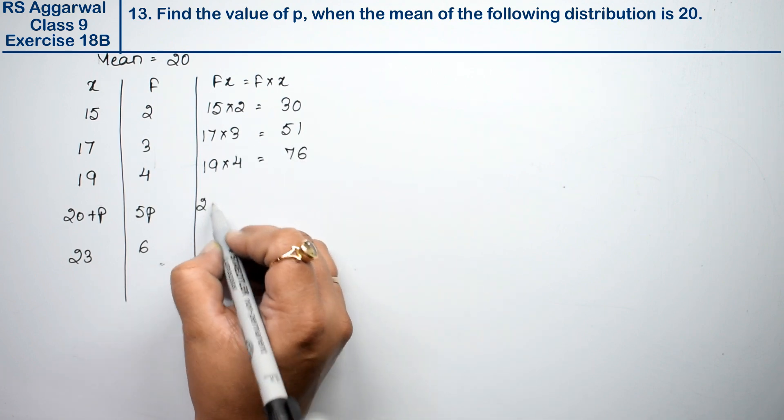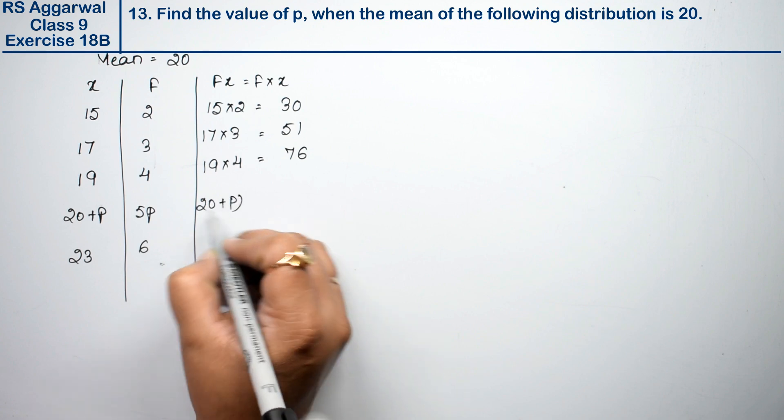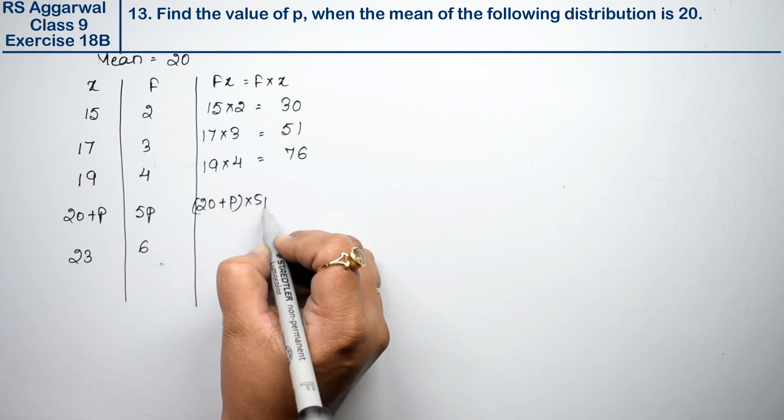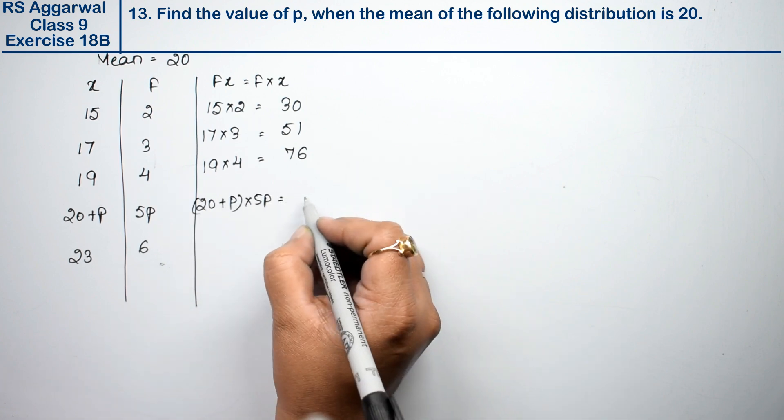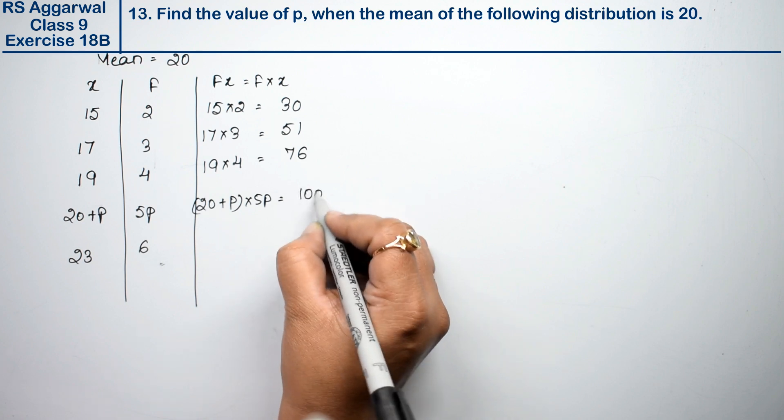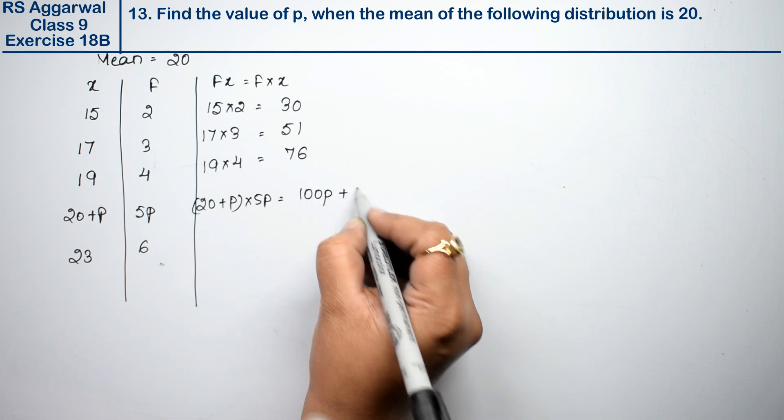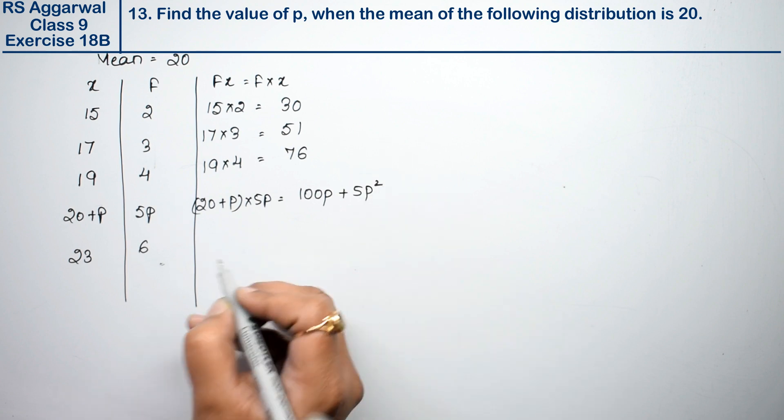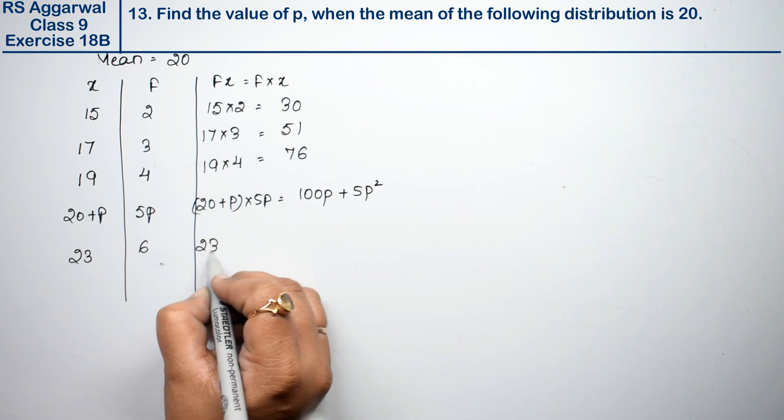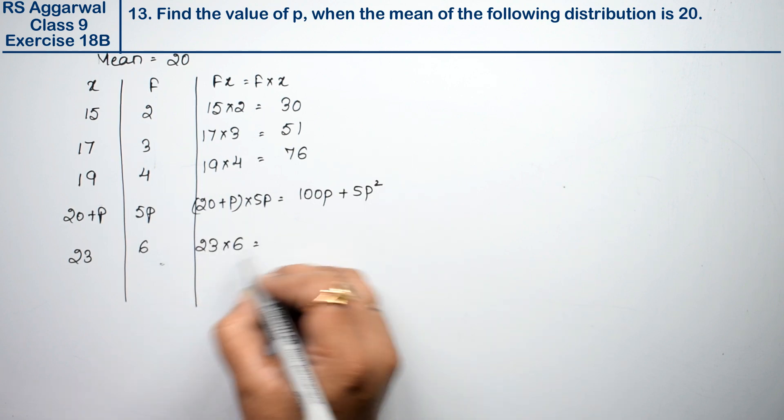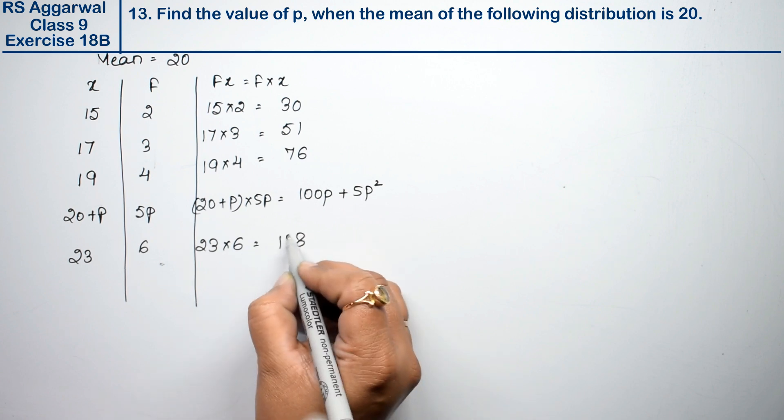Now 20 plus p into 5p. After multiplying, this gives 100p plus 5p square. Now 23 into 6: 6 times 3 is 18, plus 12 is 30, so 138.